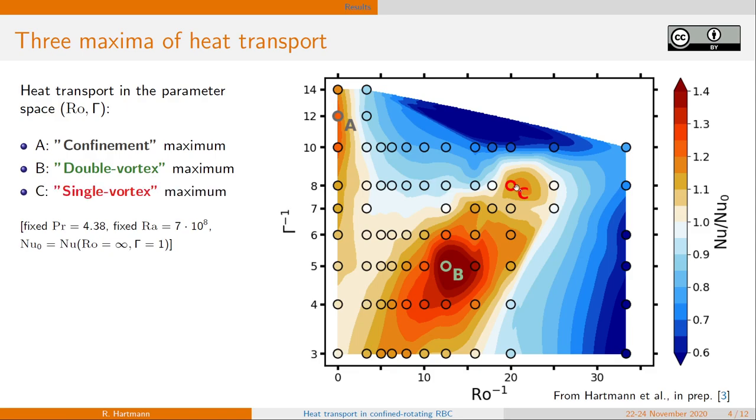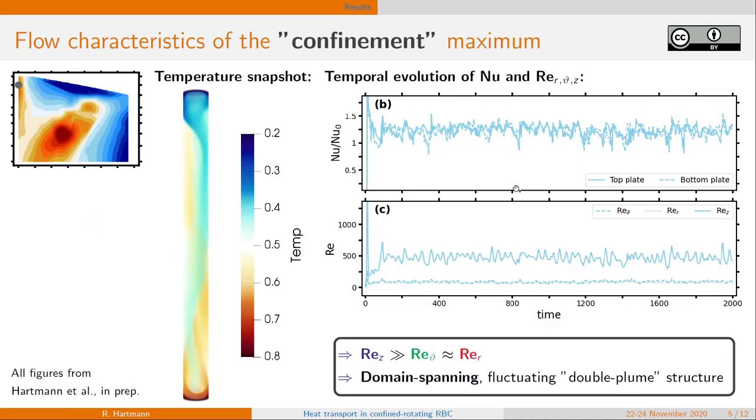Let us now have a look on the flow characteristics and I will start with the confinement maximum. From the temperature snapshot, we immediately see that we have a domain spanning flow structure of two plumes, one hot plume rising, one cold plume sinking.